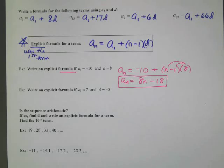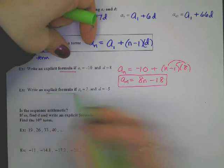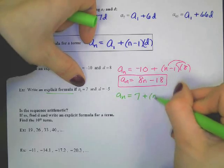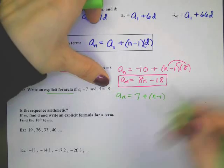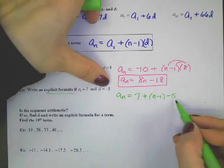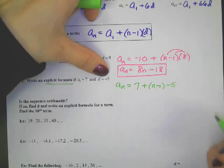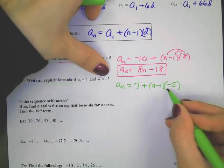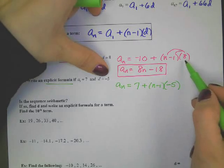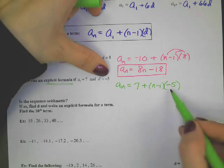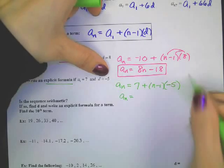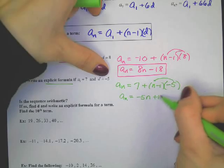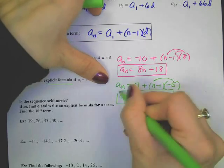Let's write an explicit formula. The first term is negative 10, and we need n minus 1 Ds — times 8. So a sub n equals negative 10 plus (n minus 1) times 8. Distribute the 8: 8n minus 8, plus negative 10 is minus 18. So the simplified formula is 8n minus 18.